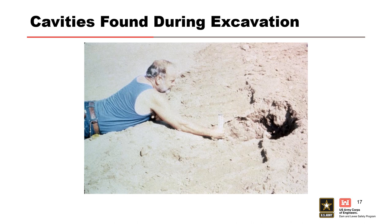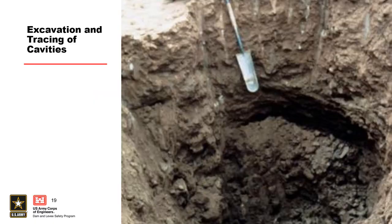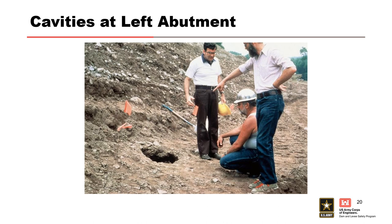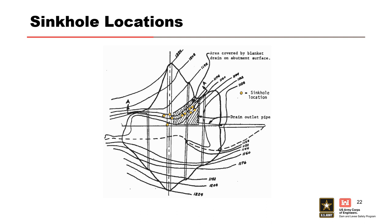Numerous cavities were found during the excavation. This hole was 28 feet deep and 6 feet in diameter. The cavities were carefully excavated and traced to study the source of the problem. Some of the cavities were up to 10 feet in diameter. It was discovered that most of the cavities originated above the steep shale left abutment. The yellow dots on the figure show sinkhole locations, which appear to be associated with a blanket drain near the left abutment and the steep rock slope on the abutment.